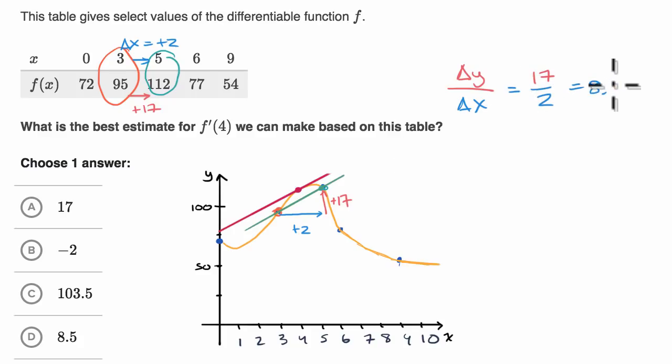So the slope of this green line here is 8.5, and that would be our best estimate for the slope of the tangent line when x equals four of the curve y is equal to f of x.